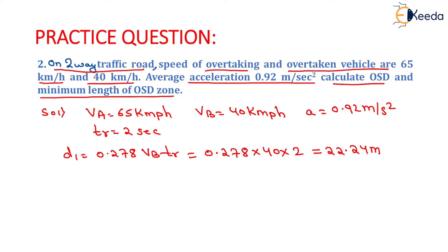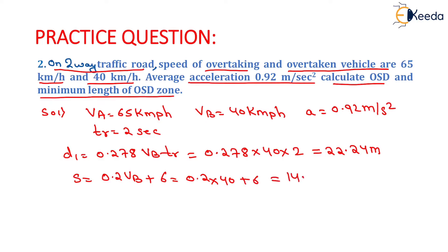We need to compute the value of capital S, which will be equal to 0.2 × VB + 6. On putting the value of VB as 40 km per hour, it will be equal to 14 meters. That will be the minimum space headway.